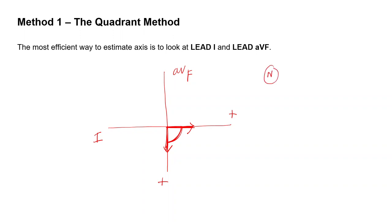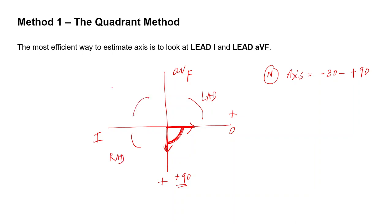Remember the normal axis of the heart is minus 30 to plus 90. For practical purposes using the quadrant method, anything in the 0 to plus 90 quadrant is taken as normal axis. Anything in the upper-left quadrant is left axis deviation. Anything in the lower-right quadrant is right axis deviation. Anything in the upper-right quadrant is extreme axis deviation or northwest axis deviation. For a normal axis, the R wave should be predominantly positive in both Lead 1 and AVF.